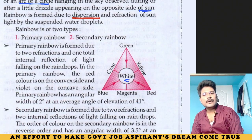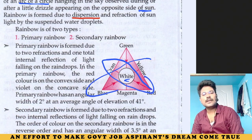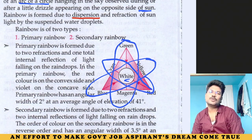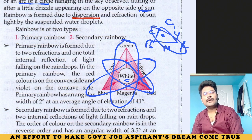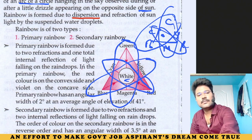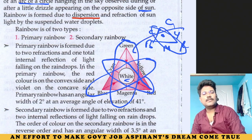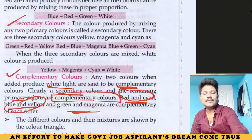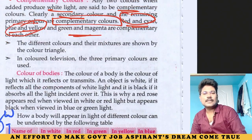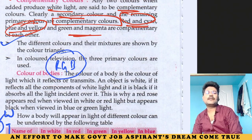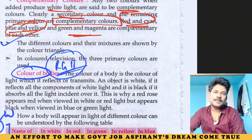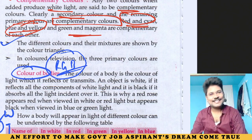White light is produced by red plus cyan, blue plus yellow, or green plus magenta — these are complementary color pairs. Different colors and their mixtures are shown by a color triangle. In color television, three primary colors R, G, B are used. We will look at color of body in the next video. Till then, take care and study well. Thank you.